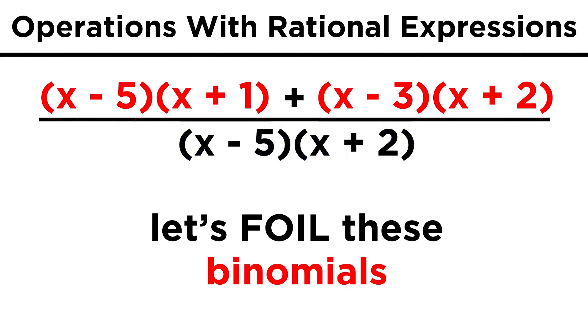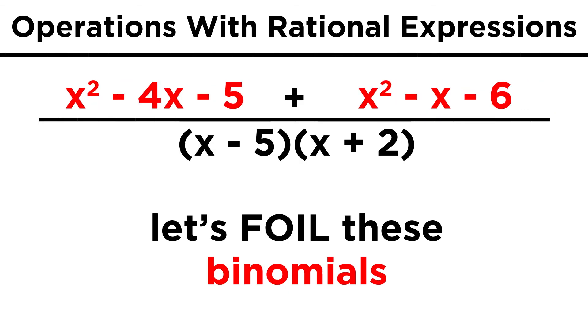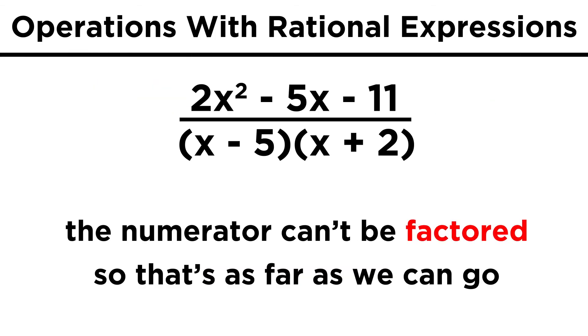Now, with the numerators, we do have to foil both of these expressions, because that will give us a bunch of like terms that we can then combine. Once we've done that, we see that the resulting expression can't be factored, and so we just leave it like this.